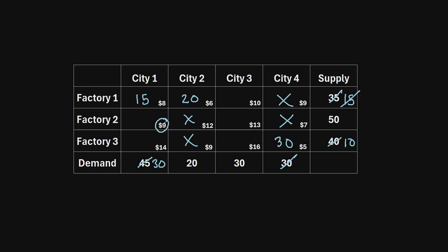The next lowest shipping cost among remaining cells is $9. City one still has a demand of 30 units. Factory two has a supply of 50, so it can fully cover that remaining demand of 30. We send 30 units through this route, reduce factory two's supply from 50 to 20, and cross out city one's demand as fully met.